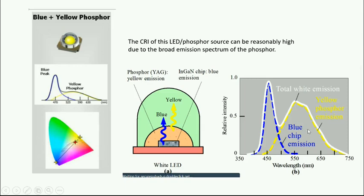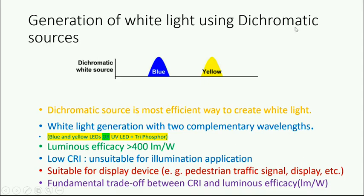Another method is generating white light using dichromatic sources. Dichromatic means two lights — you can use a blue LED and a yellow LED and combine them to get white light. Two complementary wavelengths — one blue and one yellow — are used. Alternatively, an ultraviolet LED plus a XA triphosphor can also be used as a dichromatic method of generating white LED light.